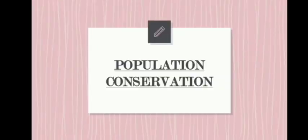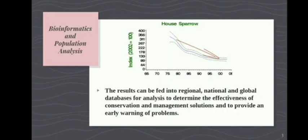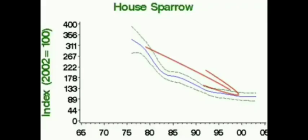I am Siti Farhan Elma Utara, and I will be discussing population conservation. Knowledge of species abundance and distribution is an essential part of conservation biology — it helps establish conservation plans for threatened and endangered species, and management plans for harvested populations. Results can be fed into regional, national, and global databases to determine the effectiveness of conservation solutions. For example, a graph illustrating the population data for house sparrows in England from 1976 to 2003 shows the population is in decline.